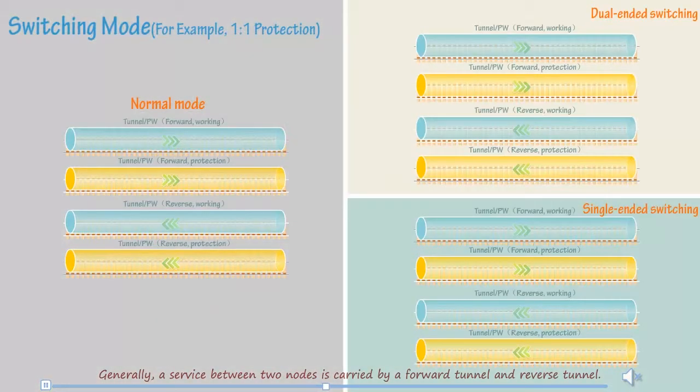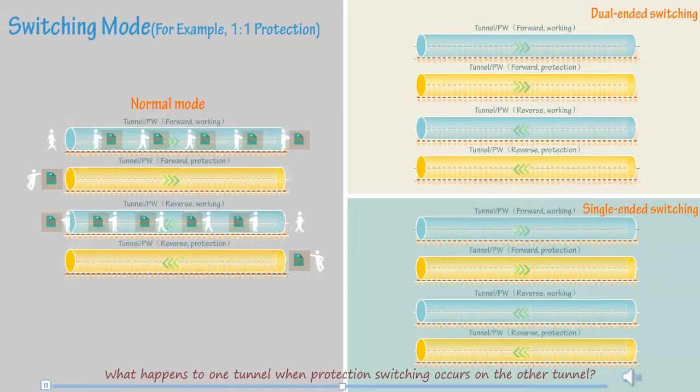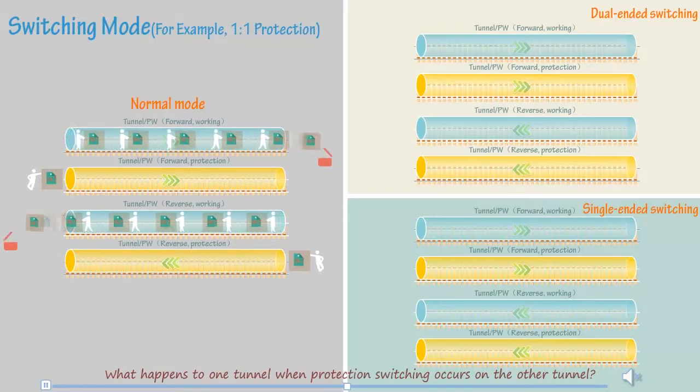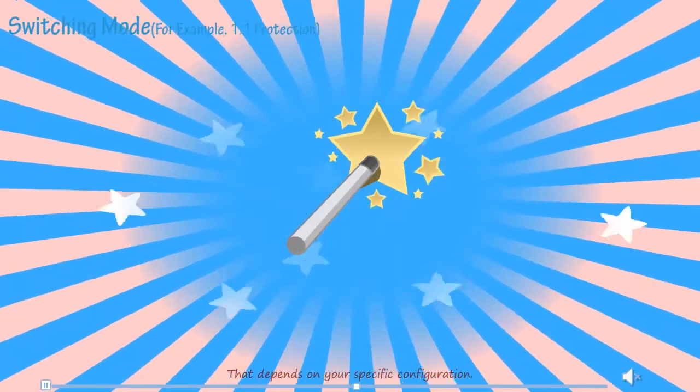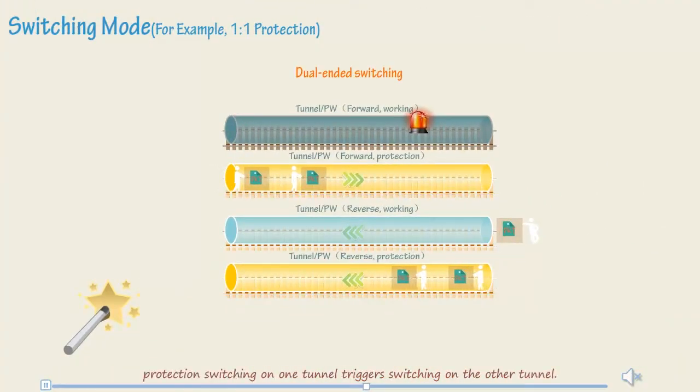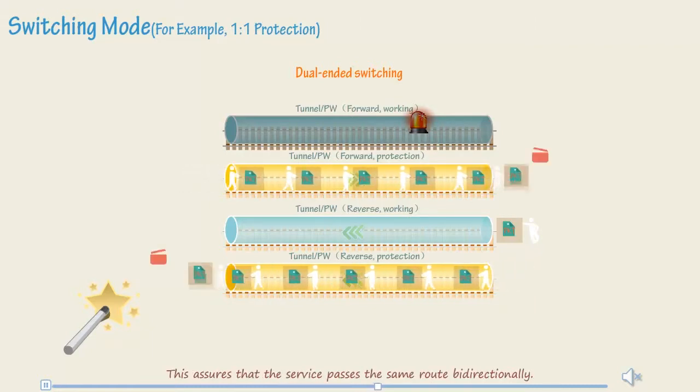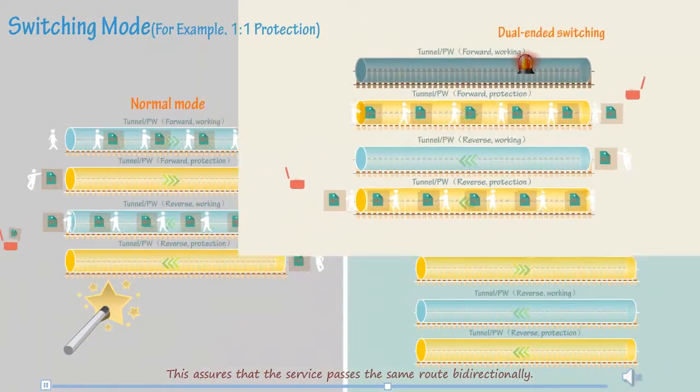Generally, a service between two nodes is carried by a forward tunnel and reverse tunnel. What happens to one tunnel when protection switching occurs on the other tunnel? That depends on your specific integration. If dual-ended switching is configured, protection switching on one tunnel triggers switching on the other tunnel. This assures that the service passes the same route bi-directionally.